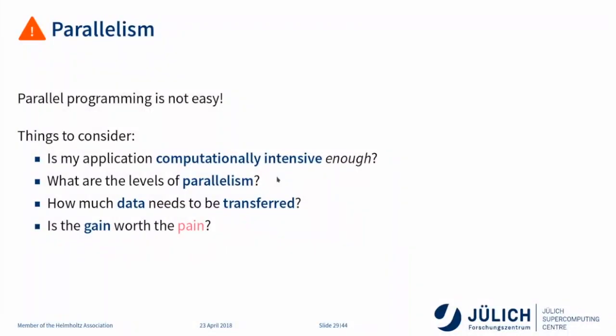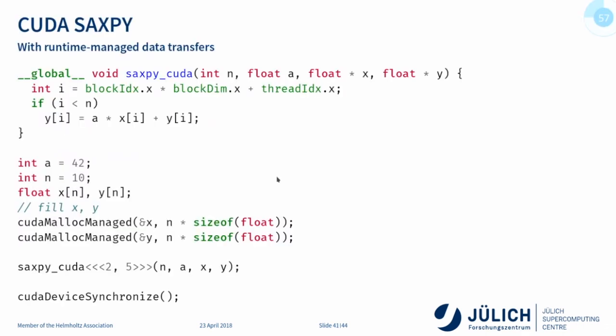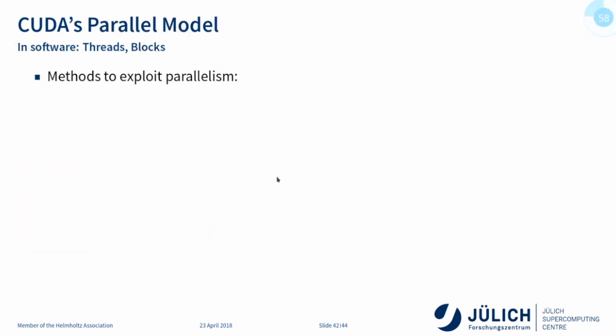For GPUs it's also important to be computationally intensive — you want to be on the right of the roofline plot with lots of instructions per byte, because memory transfer is slow. Here's a CUDA C++ example — about the simplest useful example you can write. There's a kernel with the `__global__` keyword; we use managed allocation to avoid explicit transfers and compute SAXPY: single-precision a×x + y.